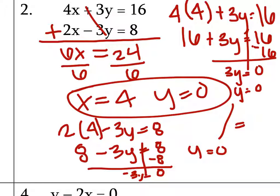Excellent work. If you show your answer in the form X equals 4 and Y equals 0, that's fine. It's still a coordinate pair — you've just explicitly stated the values. You're not going to lose any points. If you wanted to write it as a coordinate pair, it'd just be 4, 0.